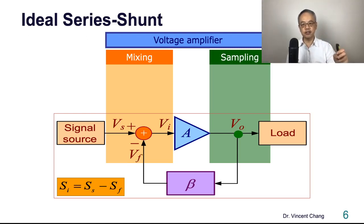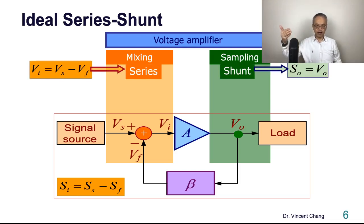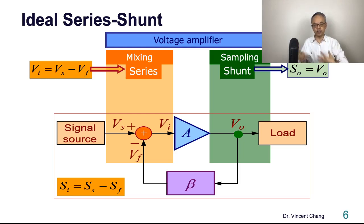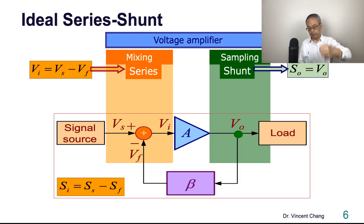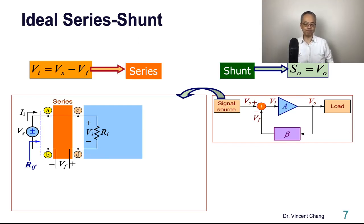This lecture is going to focus on series-shunt feedback: series mixing and shunt sampling, so voltage input and voltage output. Looking at the circuit diagram, Vs minus Vf equals Vi, where Vi represents the input signal of the amplifier. The amplifier goes to the output voltage, and the right-hand side of the feedback network samples the output voltage, doing the reverse transmission and generating a feedback signal on the left-hand side.